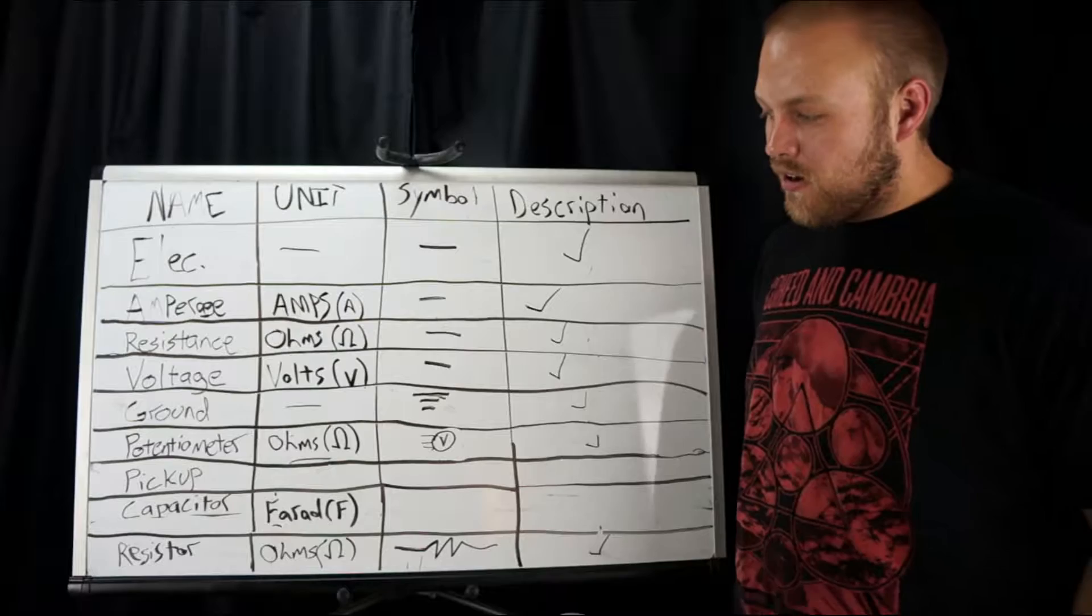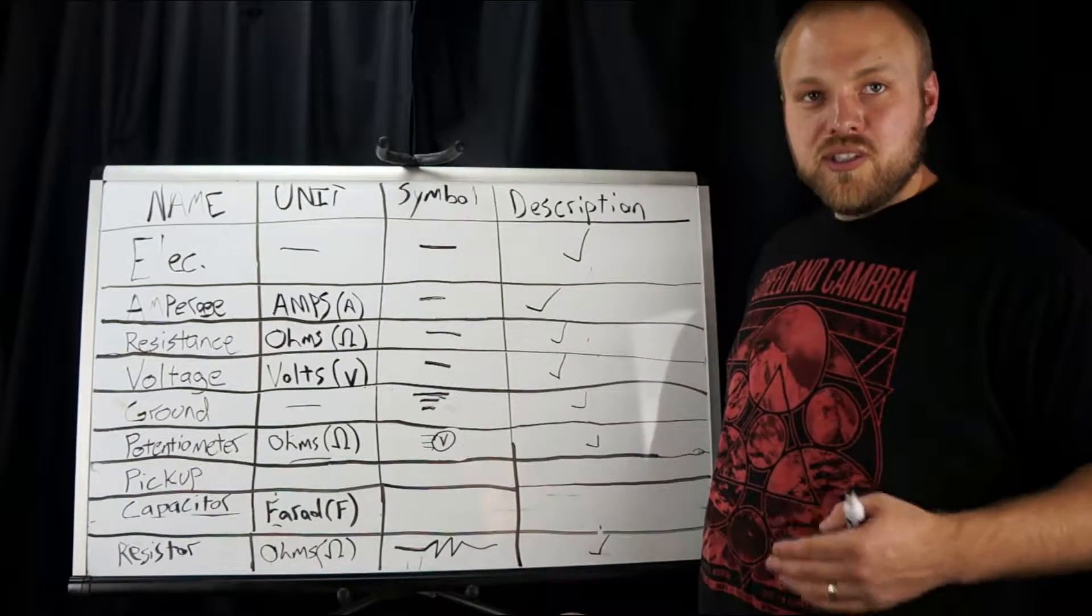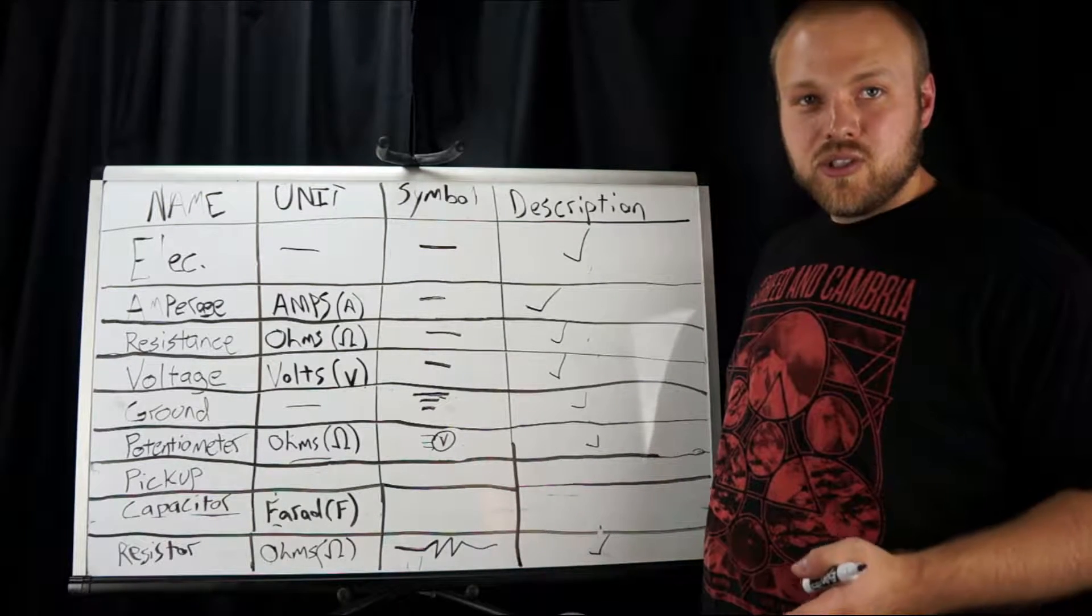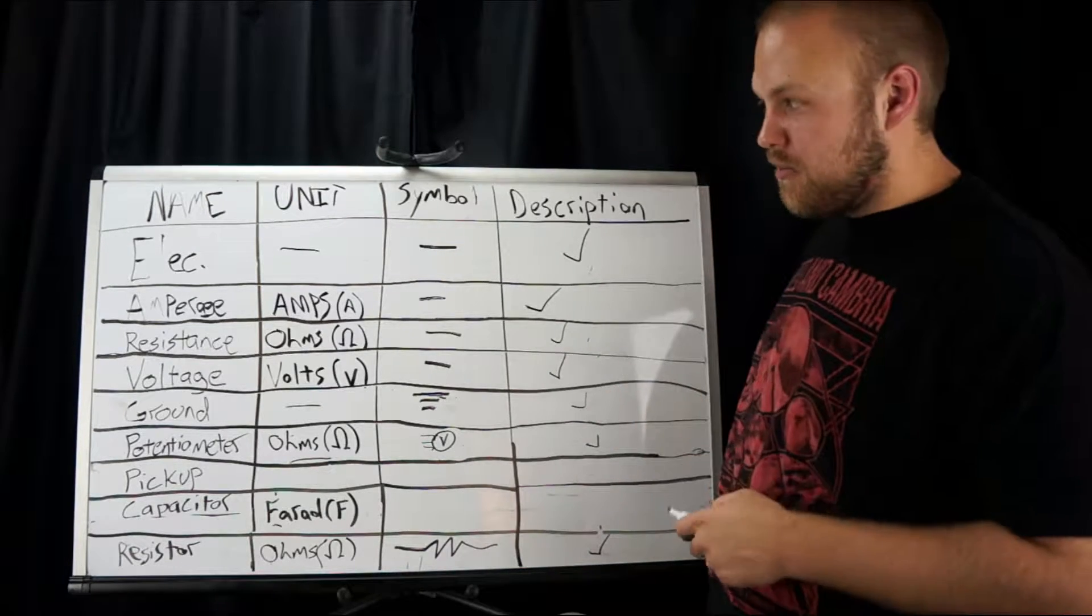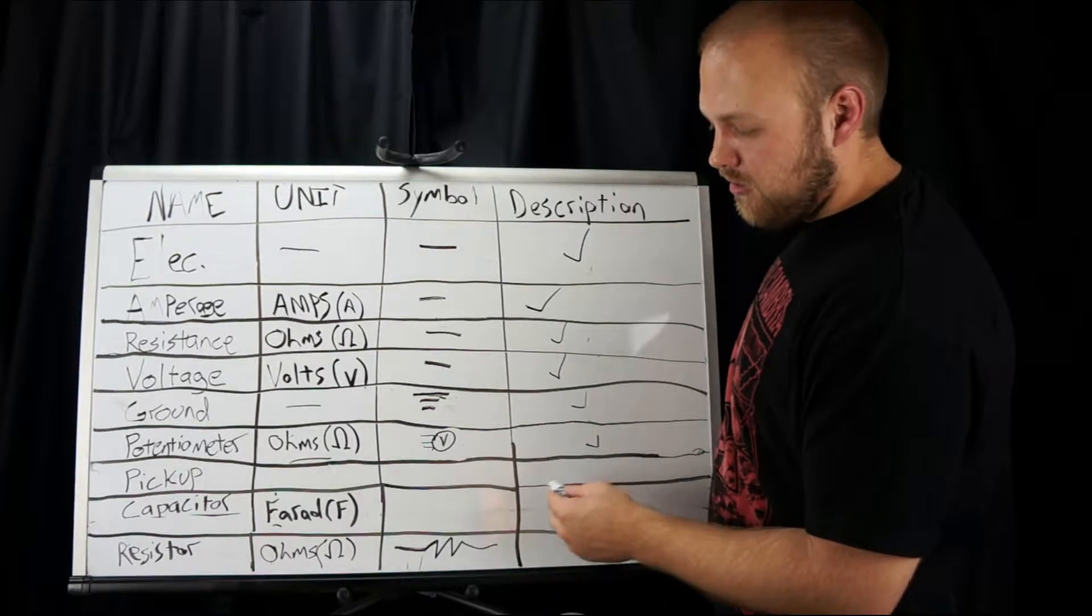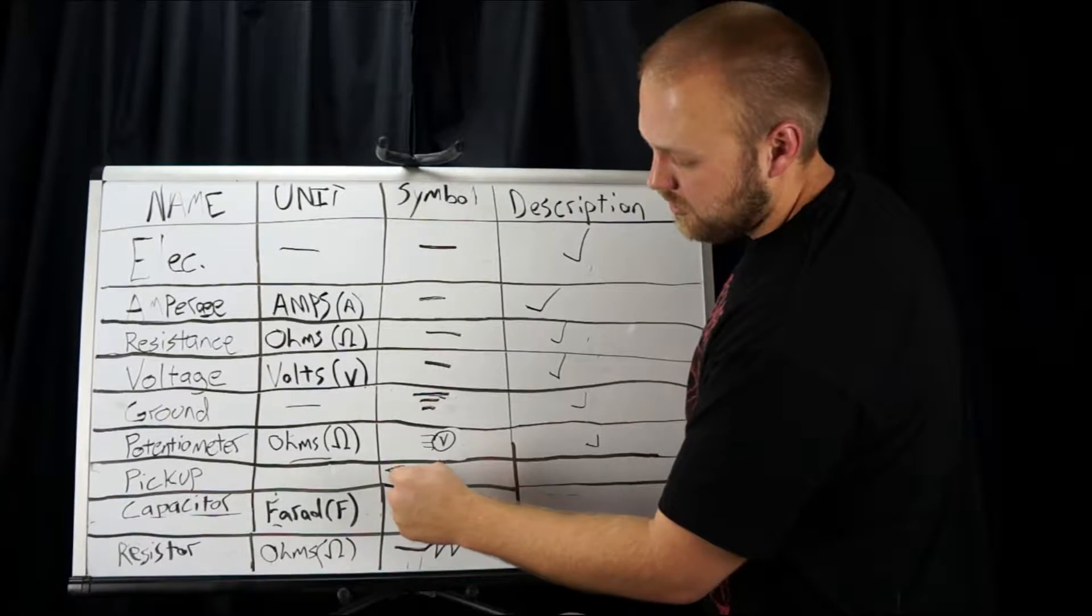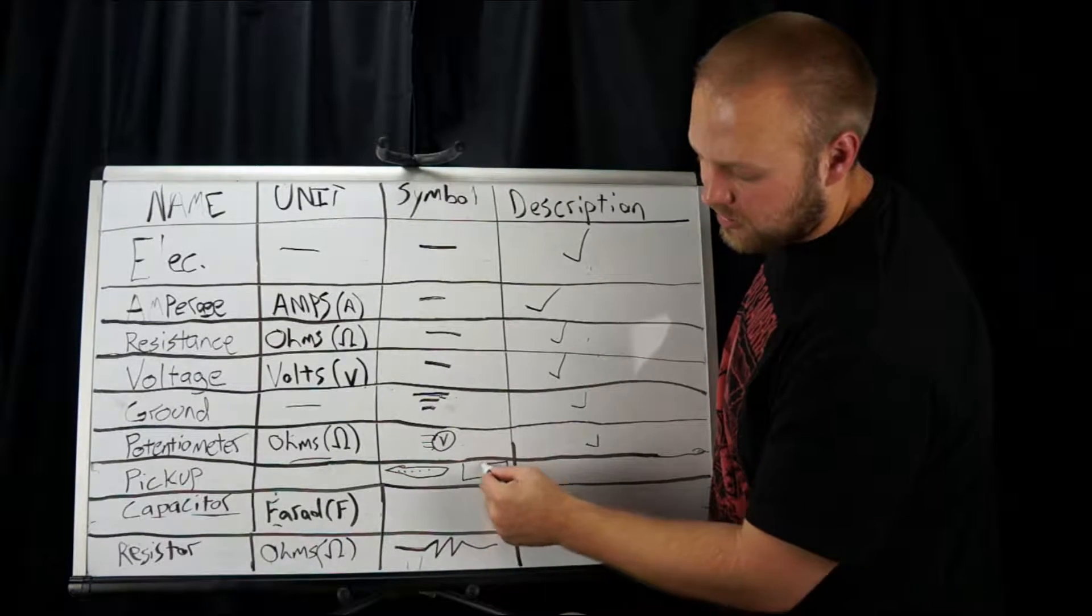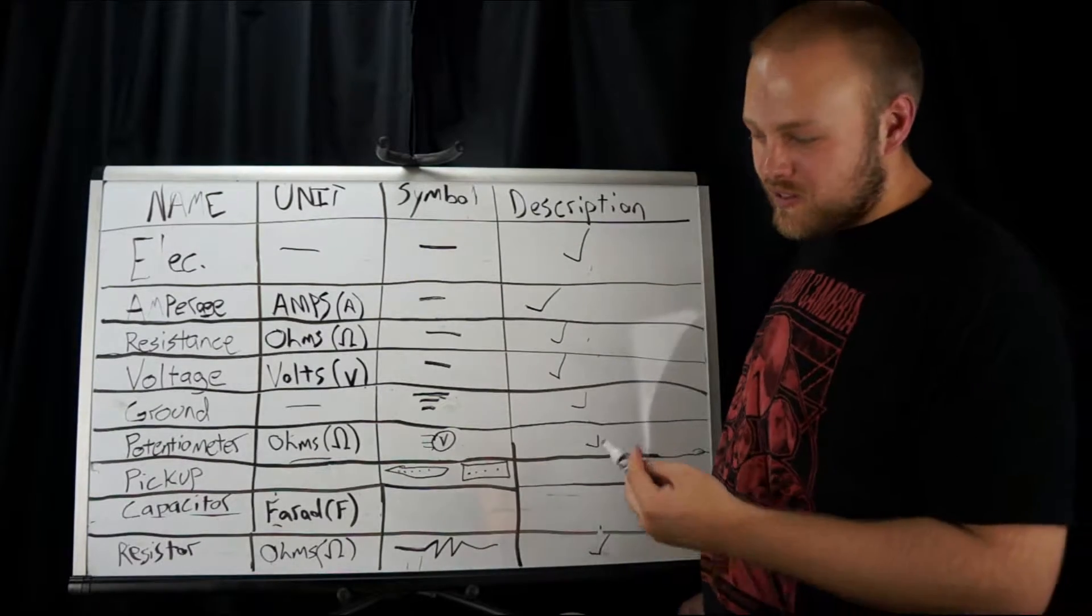Pickups are what we call transducers. It's changing acoustic sound into an electrical signal. So a transducer just changes something from one thing to another. And that's what a pickup is. For its symbol, for a single coil, I'm just gonna draw like an oval with some dots in it. And then for a humbucker I'll just do like a rectangle with some dots in it. It should be pretty obvious where there's a pickup.